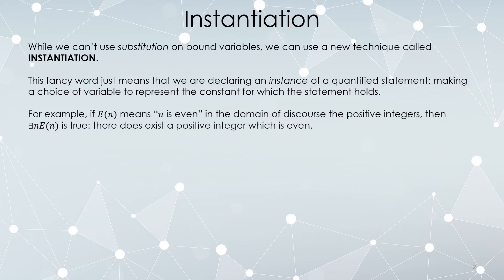For example, if E(n) means n is even, and the domain of discourse is positive integers, then there exists an n so that E(n) is true. There does exist a number which is even. If something exists, we should be able to call it by a name. This is what instantiation sort of is.